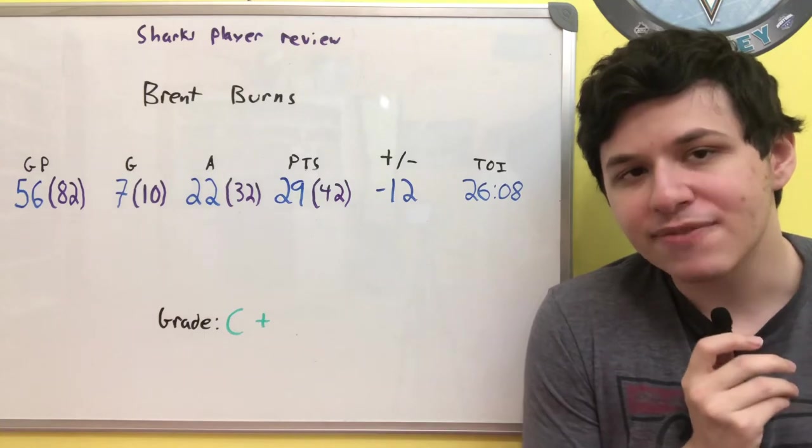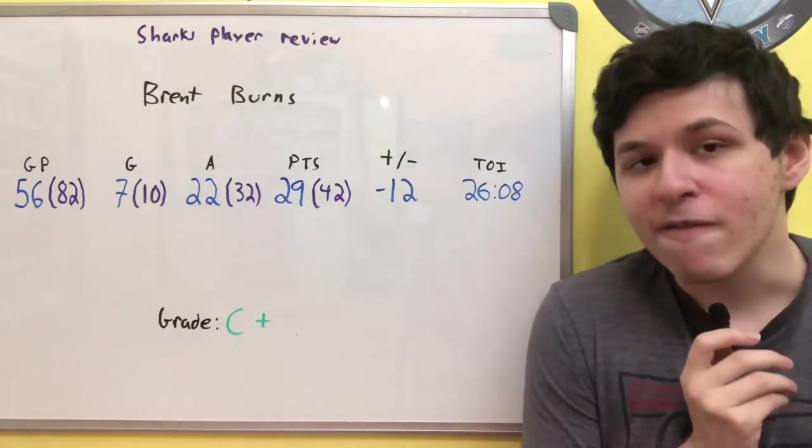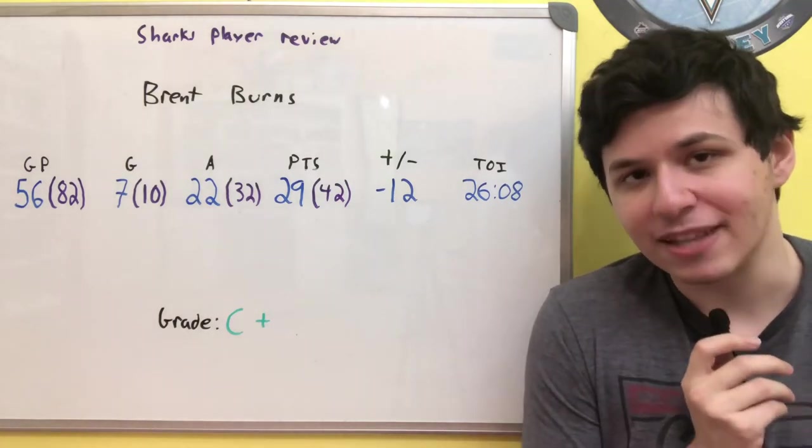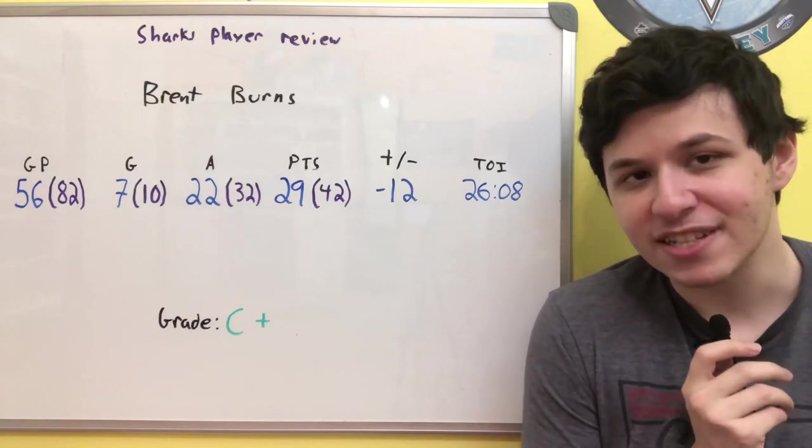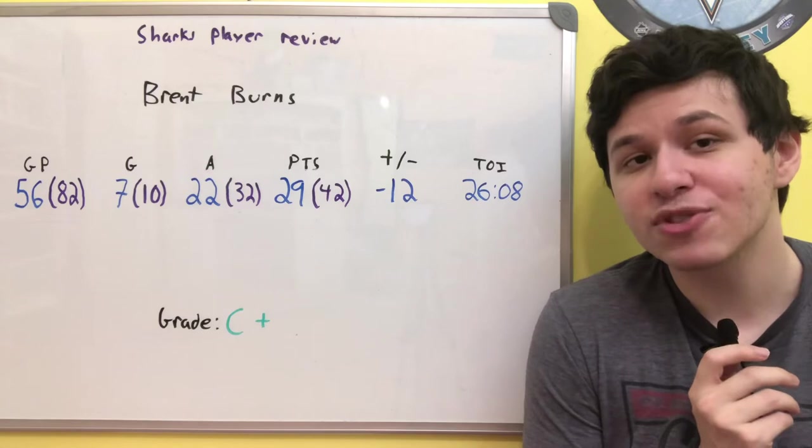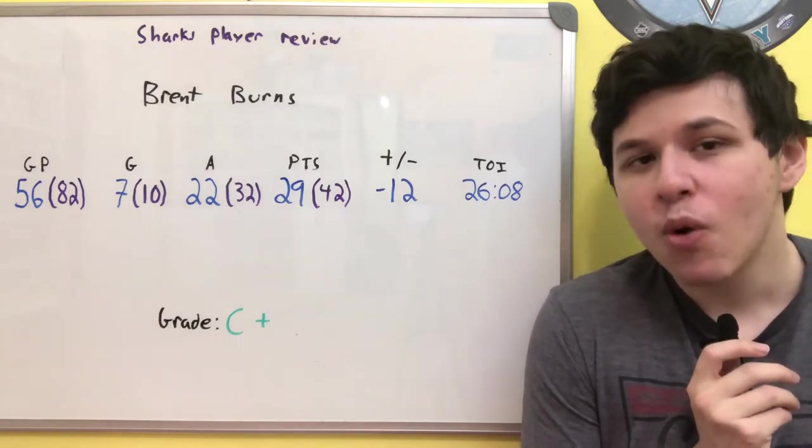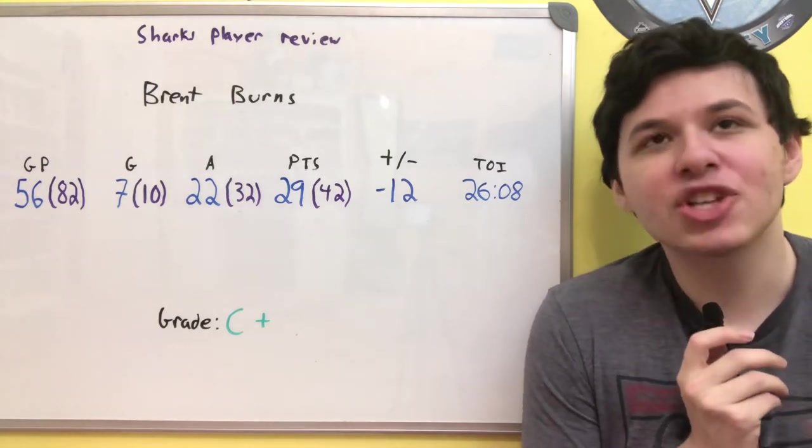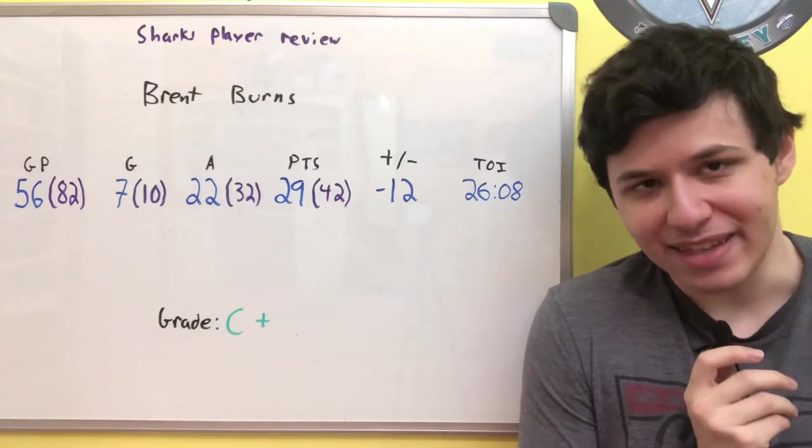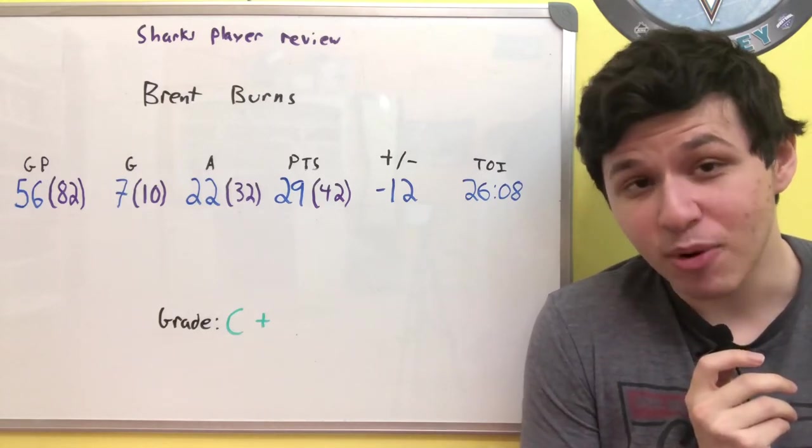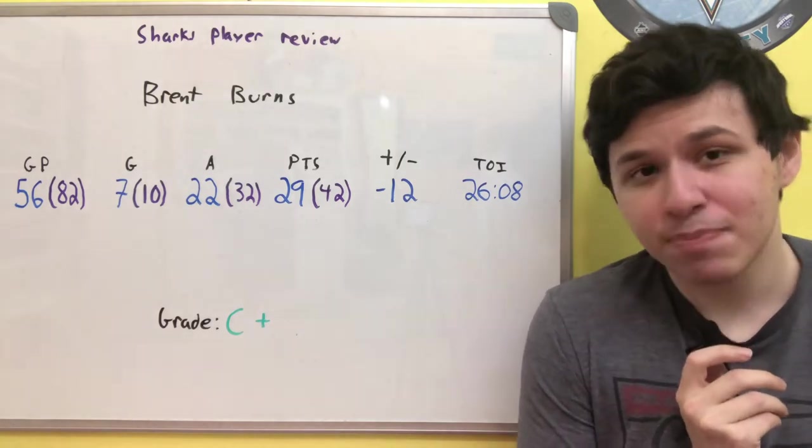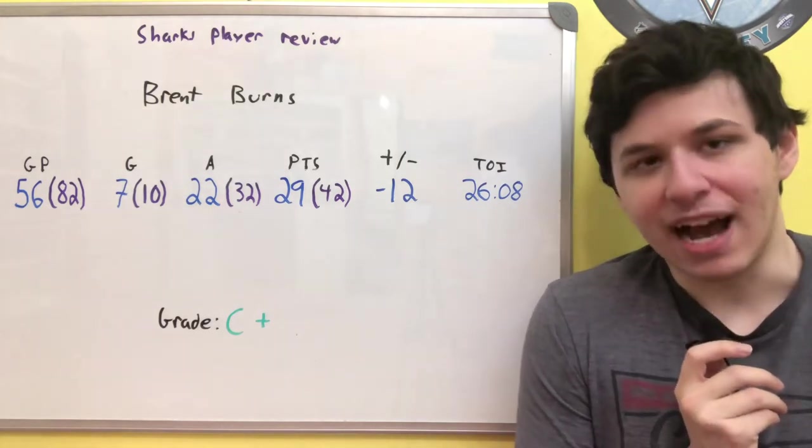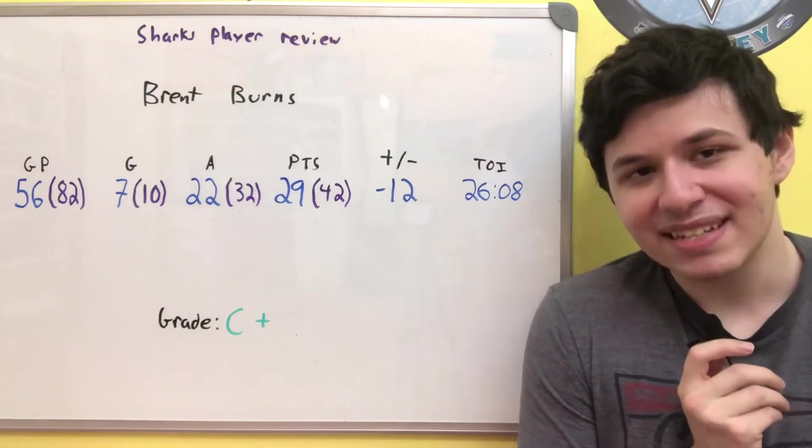Brent Burns' offensive zone start percentage was about 40% this season. To put that into perspective with past years, in the 2016-17 season, the year he won the James Norris, his offensive zone start percentage was 61%, much larger than it is this season. In the 2018-19 season, the year he got 83 points in 82 games, his offensive zone start percentage was 68%, significantly higher than what it was this season.